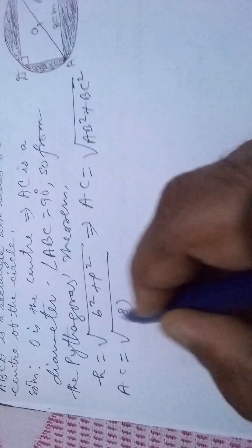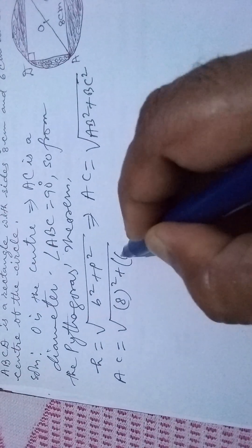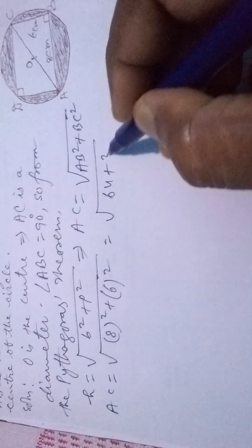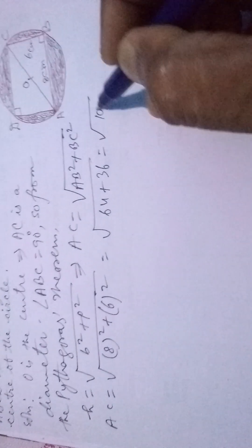8 squared plus 6 squared. That is 64 plus 36 equals square root of 100, that is equal to 10 centimeters.